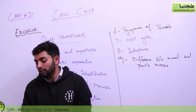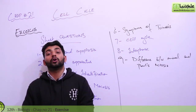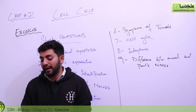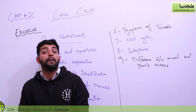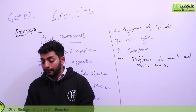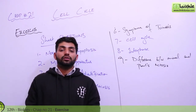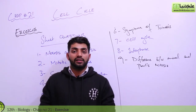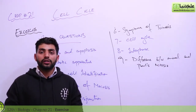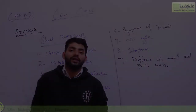Thirteenth question: compare mitosis and meiosis and describe their importance. You need to take both lectures and compare them. Also, define non-disjunction and discuss its effects — what problems arise from non-disjunction. Finally, describe meiosis and explain its significance for the human body. This was all about this exercise. If you have any questions, you can mail us. Thank you so much.